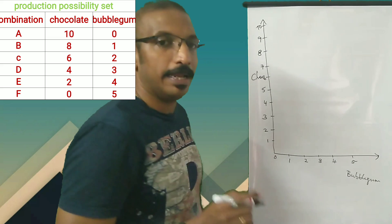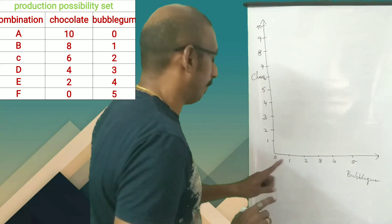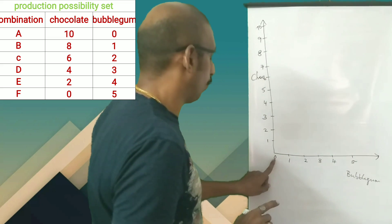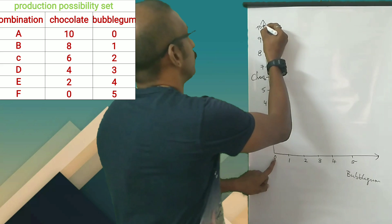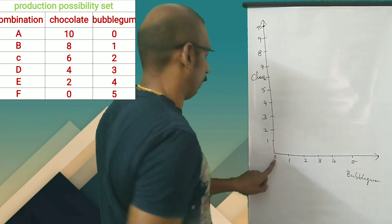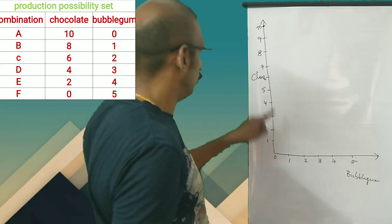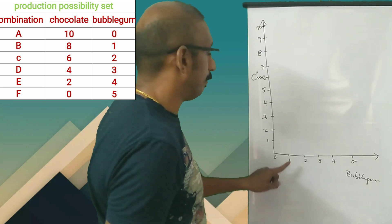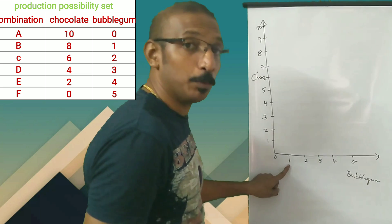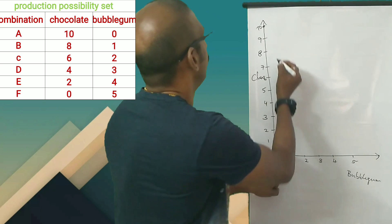Now the first combination is 0 bubble gum and 10 chocolate — we will put in the mark. Now we have 10 chocolate. If we add 1 bubble gum, we reduce the chocolate accordingly.